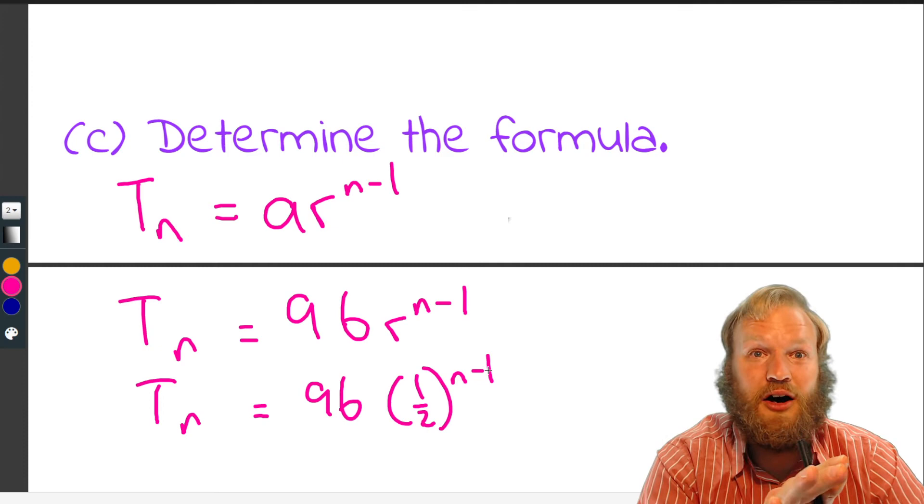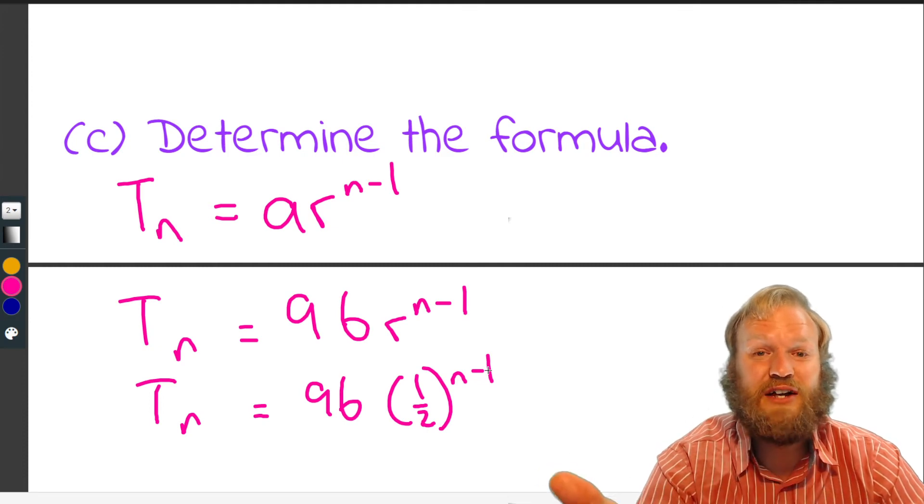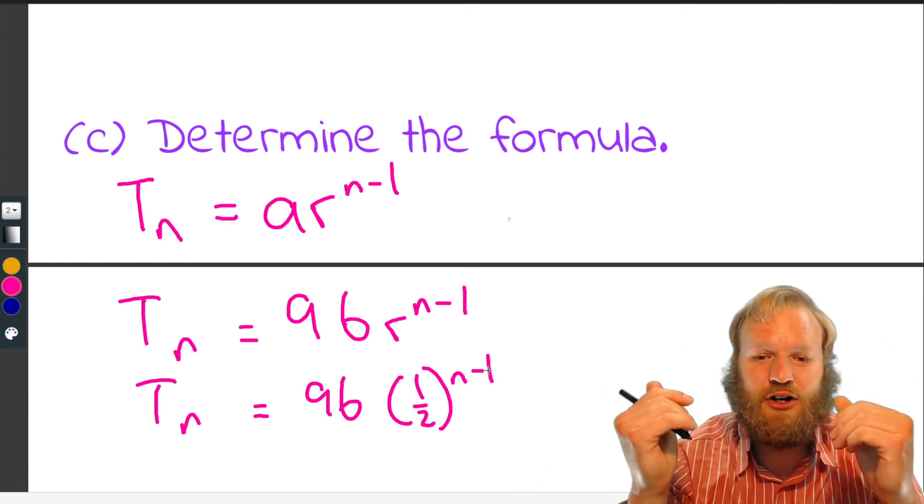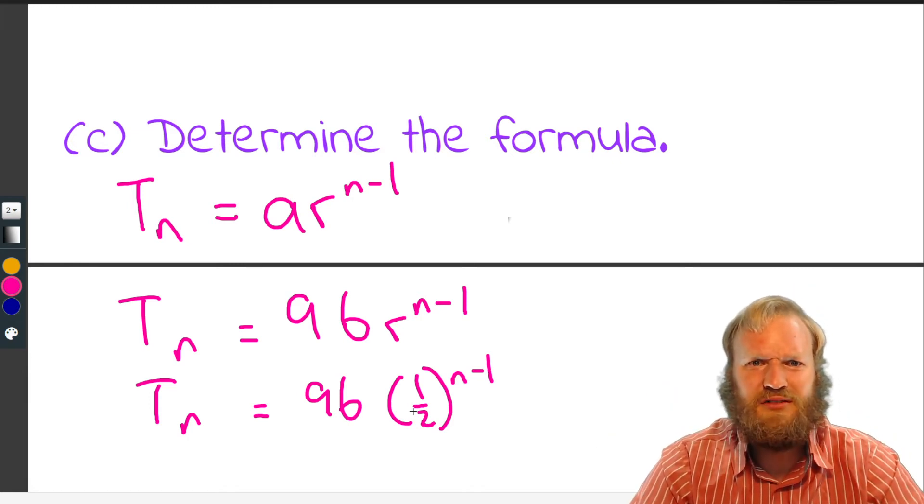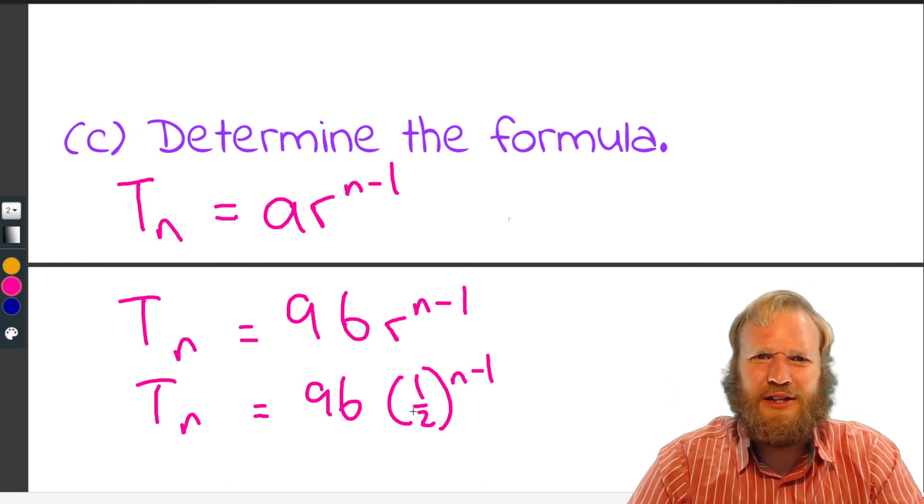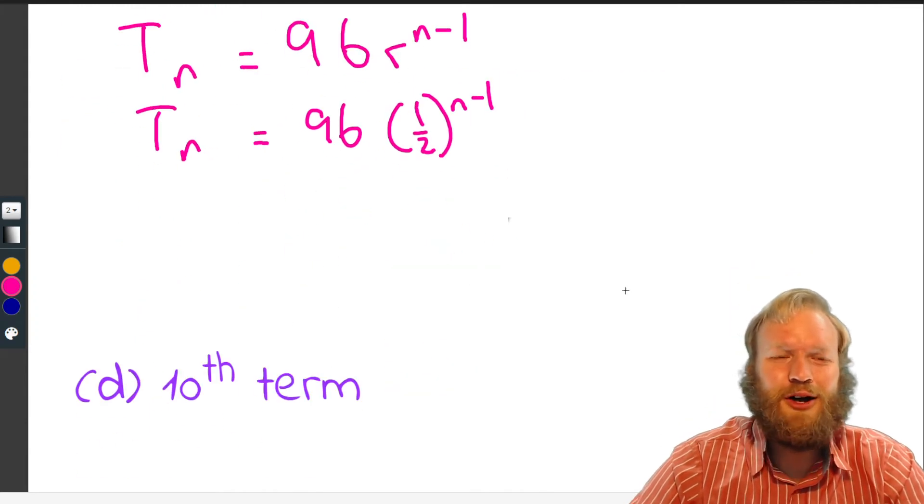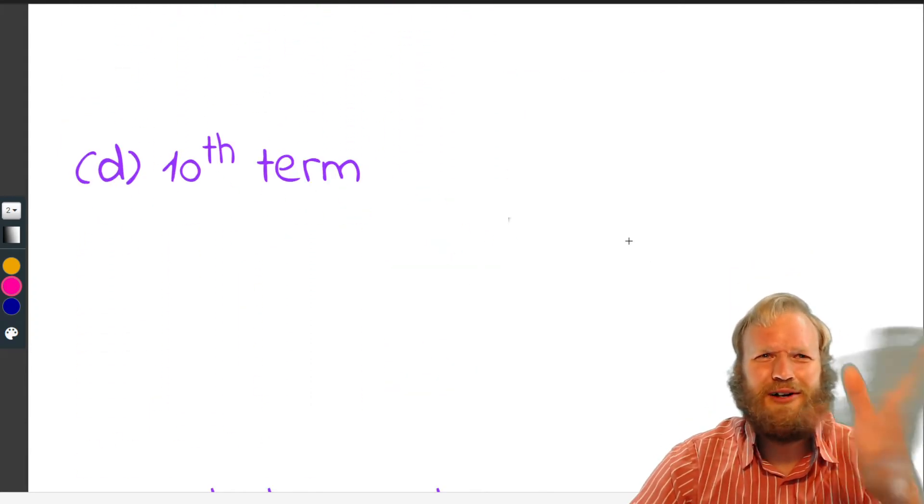So TN equals 96 times a half to the N minus one. And there's why I like the half, rather than dividing by two, because we've already got that concept of a half. So therefore, seeing the half here fits in. I don't know, what do you feel about that?